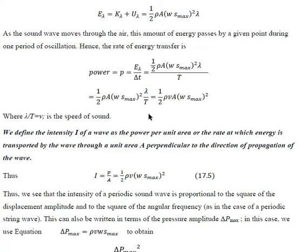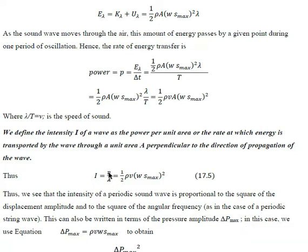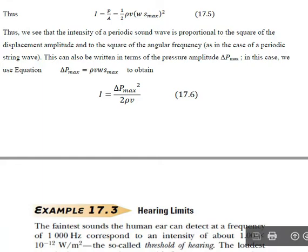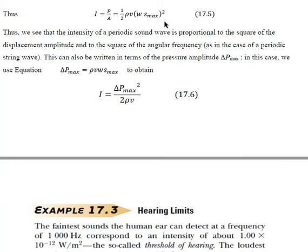Now we define intensity. The intensity is the power transmitted per unit area perpendicular to the direction of propagation of the wave. Using the equation for power and dividing by the area A, we get the intensity of the sound wave: I = half·rho·V·(ω·S_max)².